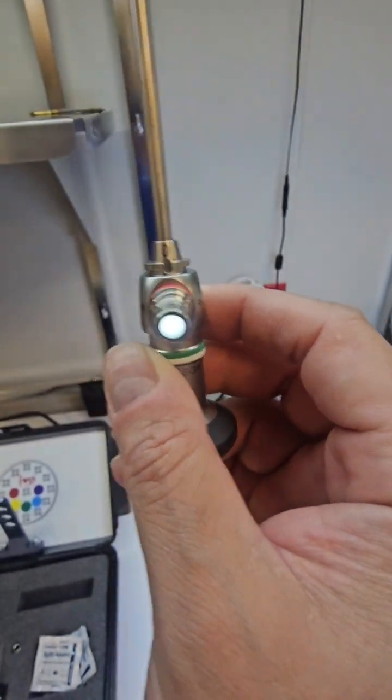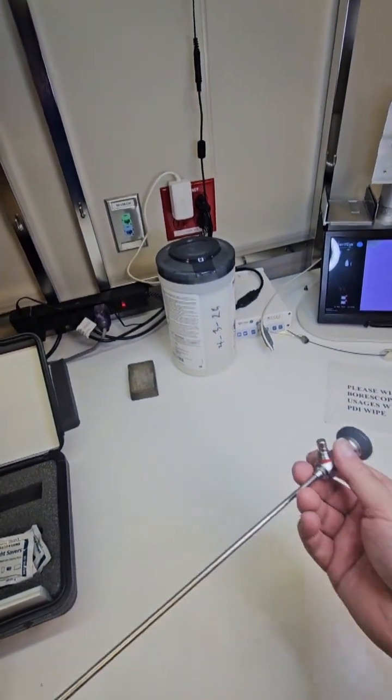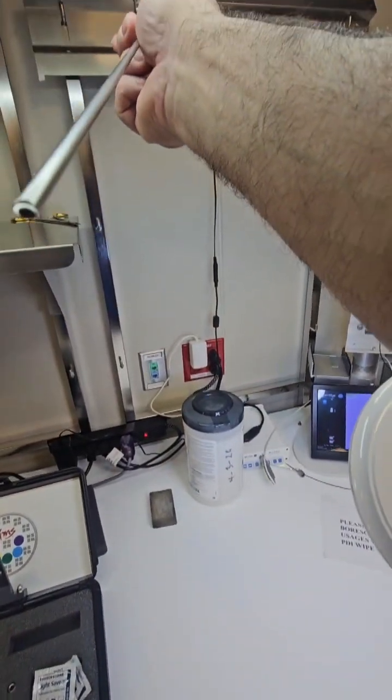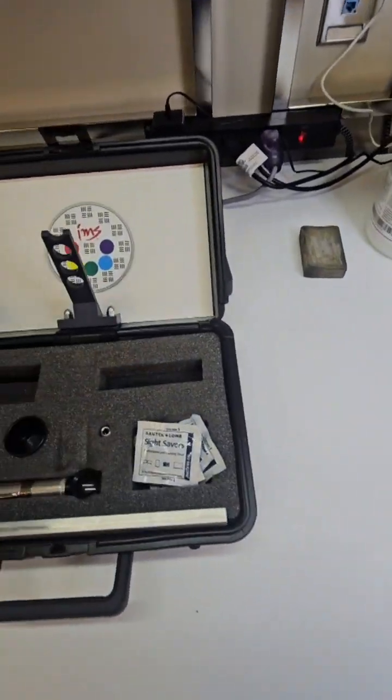You want to hold your endoscope up to a light source and look for those burnt out light fibers from the distal tip and the proximal end where the light post is at, to ensure that you're seeing a continuity and consistency with how the light looks.